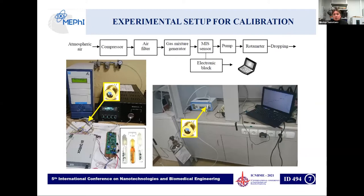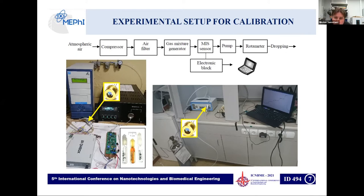Here are presented some experimental setups used for calibration, which contain a gas generator using special tubes containing ammonia for the creation of sub-PPM concentrations of ammonia, and also other interfering gases used in our experiments. We also use some electronic controllers for data acquisition. Here the sensor is located in a stream of target gases.